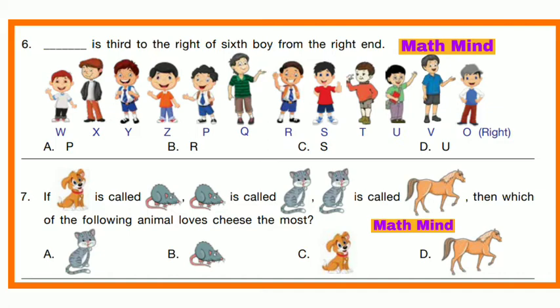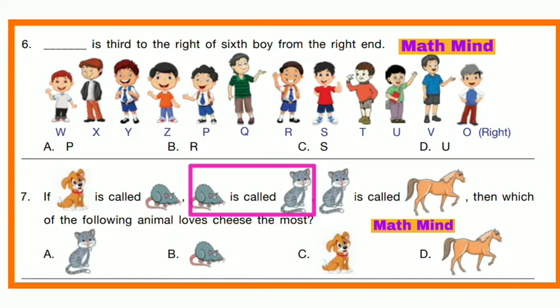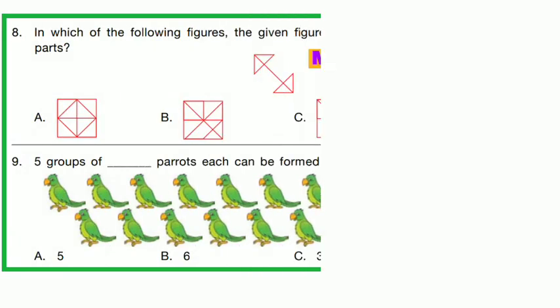Question No. 7: If dog is called rat, rat is called cat, and cat is called horse, then which animal loves cheese the most? We know that rat loves cheese, but here rat is called cat. So Option A is correct — cat.